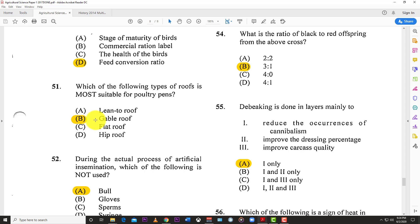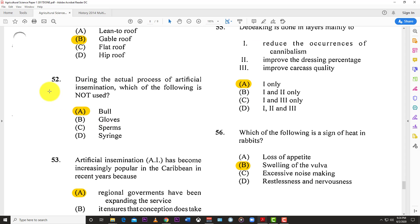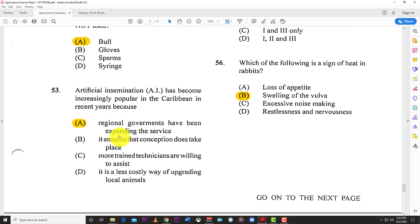Number fifty: Which of the following gives a farmer precise information on the effectiveness of feed to broilers? The answer is D, feed conversion ratio. It tells you how much weight the animal is gaining based on how much food you've fed it.